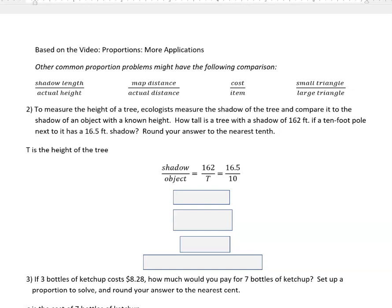Some of the common ones that might come up might be shadow length to actual height of something, map distance compared to the actual distance like scale drawing type of thing, cost compared to some item, or small triangle compared to a large triangle if you're comparing two triangles.